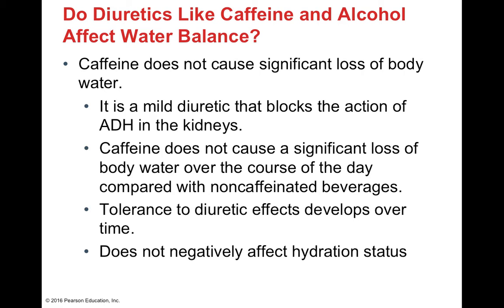Caffeine is a mild diuretic — it increases the amount of water excreted from the body by inhibiting ADH, working at the kidneys. However, caffeine doesn't cause a significant loss of body water over the course of the day compared to non-caffeinated beverages. You can also become more tolerant to caffeine over time: when first introducing caffeinated beverages you may use the bathroom more frequently, but tolerance develops. The body upregulates ADH production, so even though caffeine blocks ADH action, more ADH is created and normal function eventually resumes.